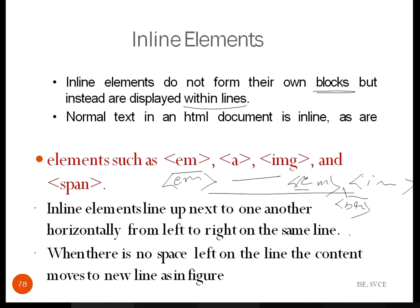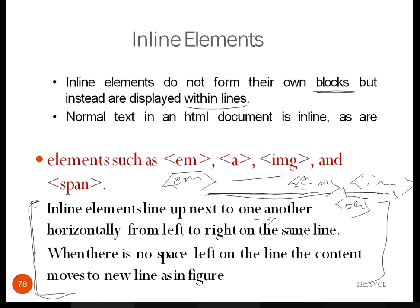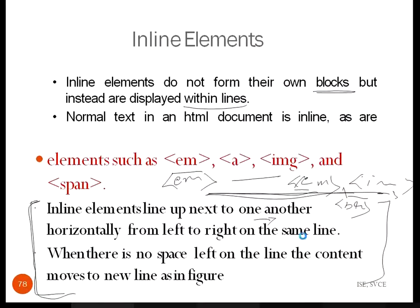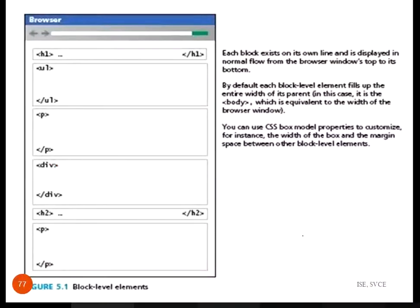Inline elements line up next to one another horizontally from left to right on the same line. However you have specified them in the document, the data displays from left to right in the same line. When there is no space remaining on a line, the content moves to the next line. Once it reaches the end of the line, it goes to a new line to represent the remaining information. Understanding this difference from block level elements is important when working with layouts.